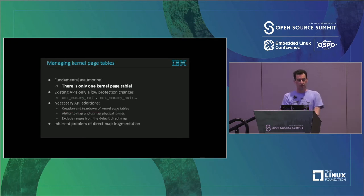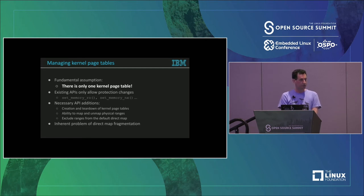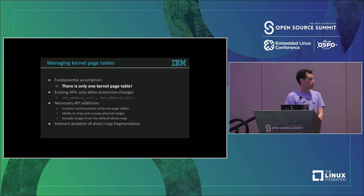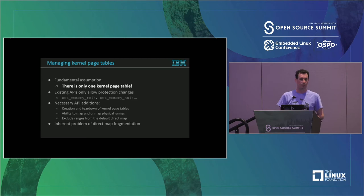Kernel page tables — since forever — there is only one kernel page table. We've put a lot of effort into managing user page tables; there is a lot of code that does various optimizations for how user page tables are handled. But this code is not really accessible when one wants to do things with kernel page tables. Kernel page tables are mostly accessed by simple accessors, and there are no mechanisms for TLB gathering and so on.